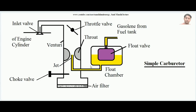Hello students, today we will learn how a carburetor works. A carburetor is a device used with SI engines. The job of a carburetor is to make a proper mixture of air and gasoline. Generally, carburetor is used with liquid fuels — gasoline is used with automobiles for SI engines — so that it can perfectly burn inside the cylinder when combustion happens.